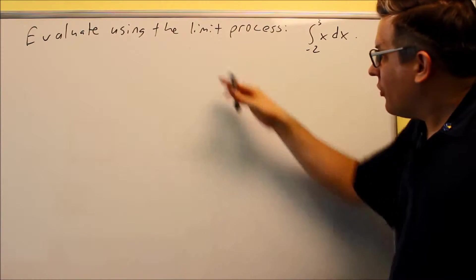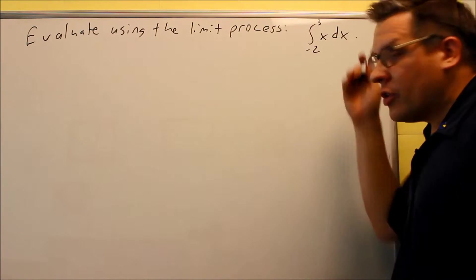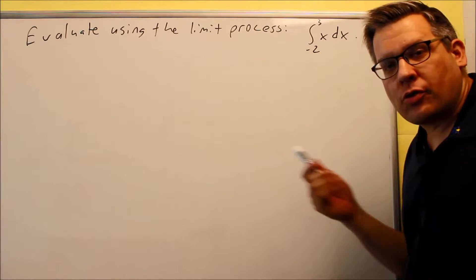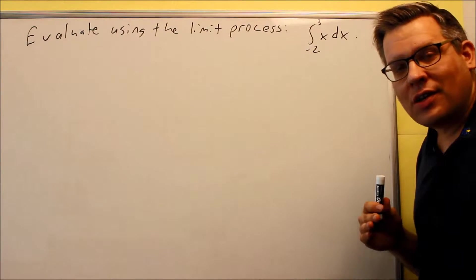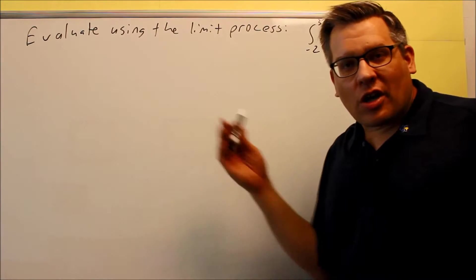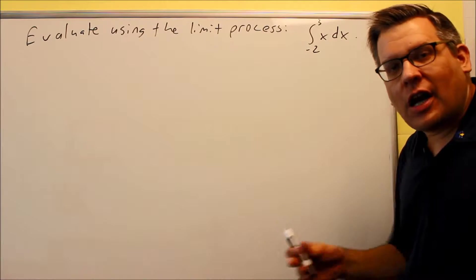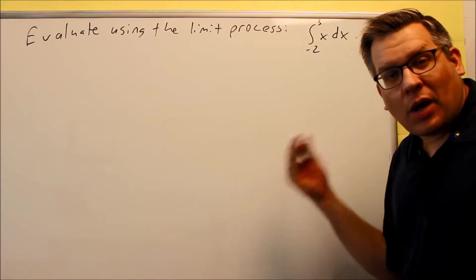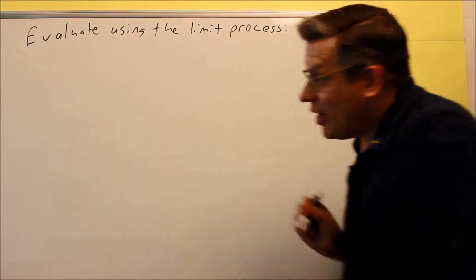Now, in future problems, if it doesn't say limit process, then we're actually going to solve this by using the antiderivative, and that's what we'll be doing for the remainder of this course. But because this problem says limit process, we are going to go back to the same process we've done before in the previous section. Now, in this section, we do want to use the norm, and if you do these problems online in an online homework system, it's probably going to ask you to work with the norm notation here.